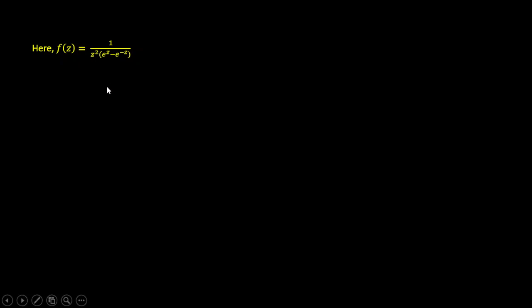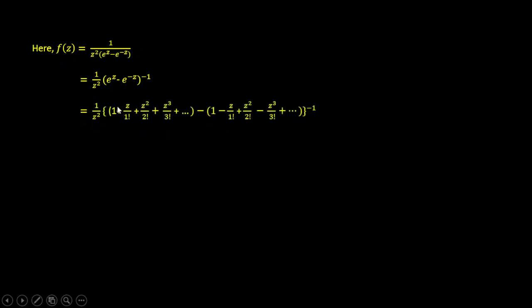Now we apply series expansion. We write: 1/z² into (e^z minus e^(-z)). We expand e^z as: 1 plus z/1! plus z²/2! plus z³/3! plus z⁴/4! plus dot dot dot. Minus e^(-z), which is: 1 minus z/1! plus z²/2! minus z³/3! plus z⁴/4! plus dot dot dot.